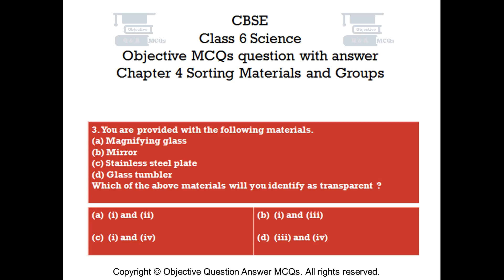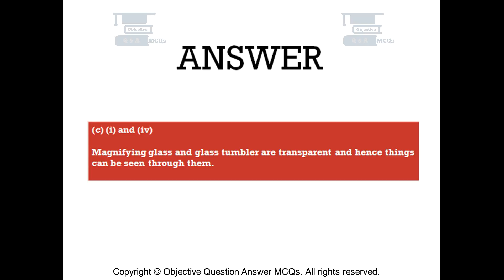Question number 3. You are provided with the following materials: 1. Magnifying glass, 2. Mirror, 3. Stainless steel plate, 4. Glass tumbler. Which of the above materials will you identify as transparent? Option A: 1 and 2. Option B: 1 and 3. Option C: 1 and 4. Option D: 3 and 4. The right answer is Option C — 1 and 4. Magnifying glass and glass tumbler are transparent and hence things can be seen through them.